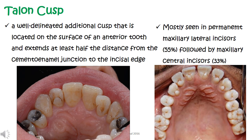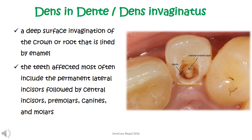Talon cusp is a well-delineated additional cusp located on the surface of an anterior tooth that extends at least half the distance from the cemento-enamel junction to the incisal edge. In the figure, we can see that the right maxillary lateral incisor has a talon cusp. Talon cusps are mostly seen in permanent maxillary lateral incisors, followed by maxillary central incisors, and sometimes on mandibular anteriors and premolars too.